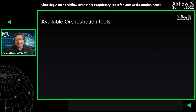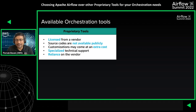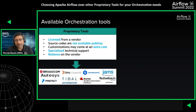Talking about the available orchestration tools in the market — the first category is proprietary tools. These tools require licenses from a vendor to install on machines. Source codes are not publicly available, customizations may come at an extra cost, and the vendor provides specialized technical support, especially for enterprise clients. There is always a reliance on the vendor to continue to improve the product.